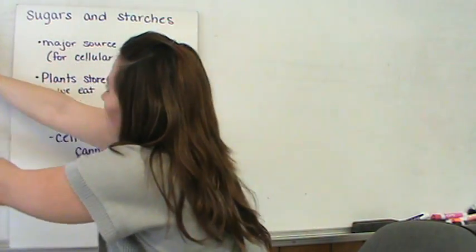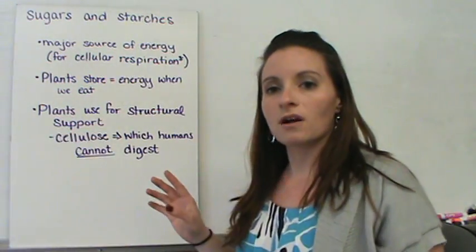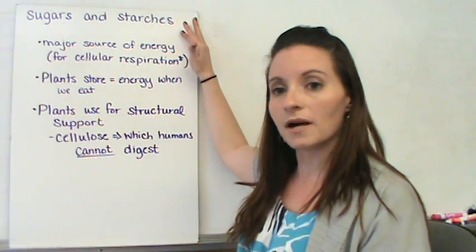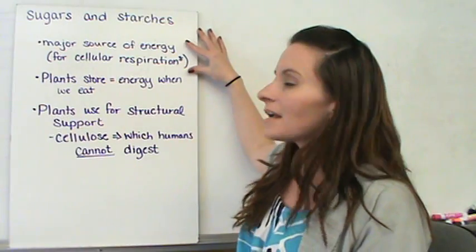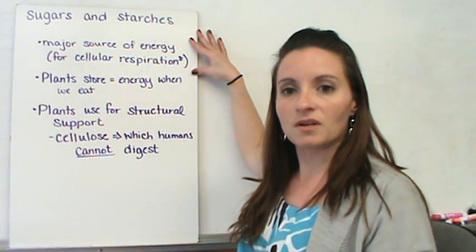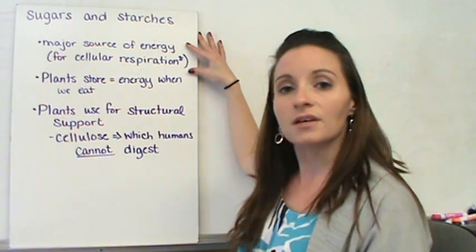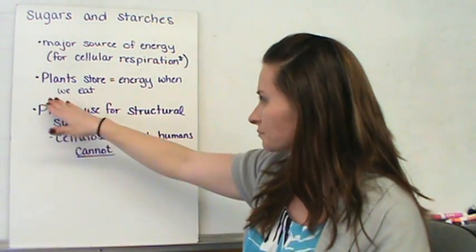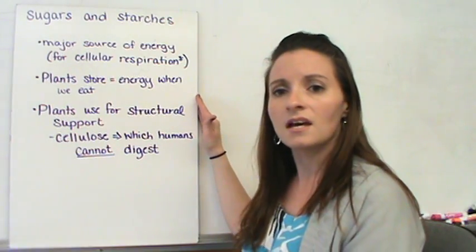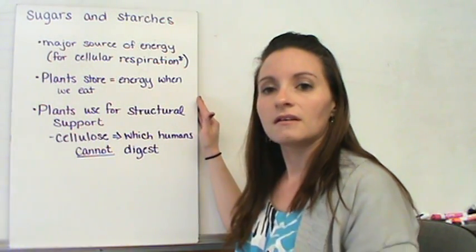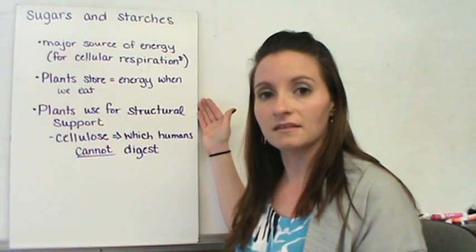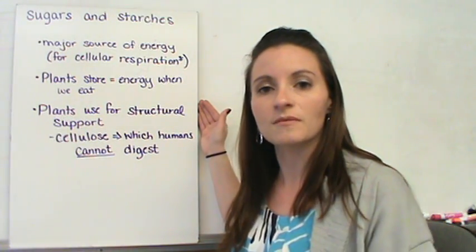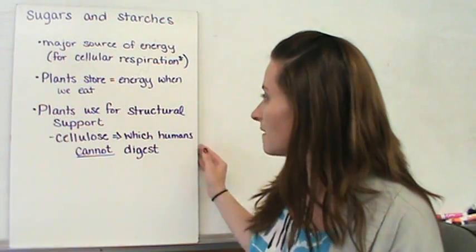There are some major functions for carbohydrates. Sugars and starches are both carbohydrates. They are a major source of energy, especially for cellular respiration, and we'll talk about that a little bit later in the year. Plants actually take and store energy in the form of carbohydrates, and that's what we eat. We get the energy from the carbohydrates of those plants.